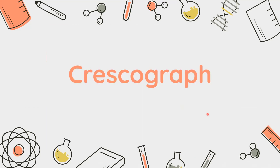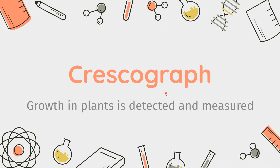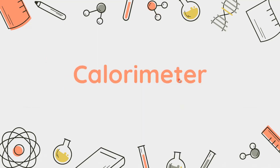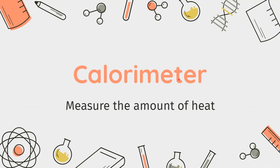Next is the Crisograph. It is basically used to detect and measure the growth in plants. Next is the Colorimeter. It is basically used to measure the amount of heat.